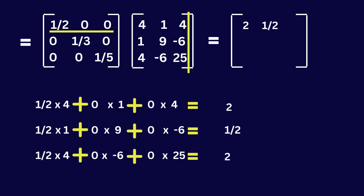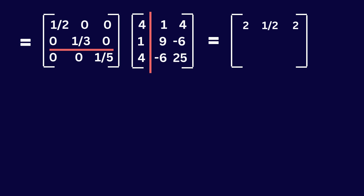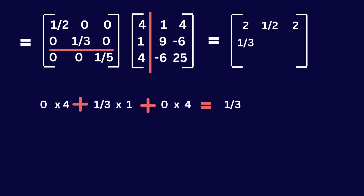Multiply 4 again gives 2, 0 multiplied by minus 6 gives 0, and 0 multiplied by 25 gives 0, so the overall answer is again 2 — I will put 2 here. Now take the second row of the first matrix and the first column of the second matrix: 0 multiplied by 25 is 0, 1 over 3 multiplied by something gives 1 over 3 — I will put 1 over 3 here.